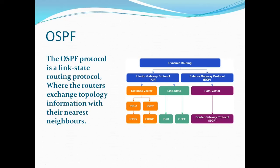Today we'll be learning OSPF. OSPF itself is a protocol and it's an example of a link-state routing protocol. It falls under interior gateway protocol (IGP) and is a type of dynamic routing. In OSPF, routers exchange topology information with their nearest neighbors for communication.